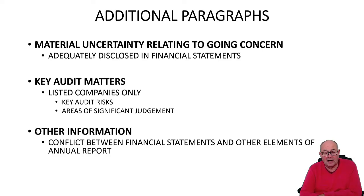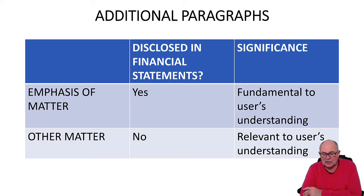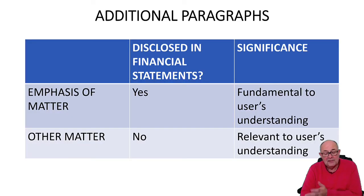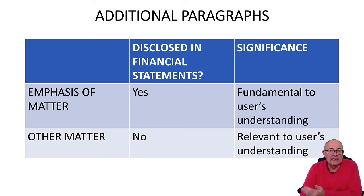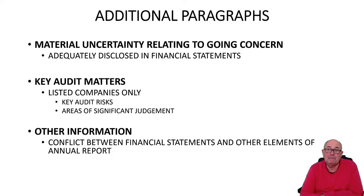The other two paragraphs are less significant these days. One is called emphasis of matter and the other is other matter. Emphasis of matter is something that has been disclosed in the accounts that is regarded as fundamental to users' understanding. It doesn't cover going concern because that has its own paragraph. Therefore it becomes difficult to think of examples, but they would include something like the early adoption of a new accounting standard, or perhaps some significant legal claim that is very large but not big enough to impact going concern.